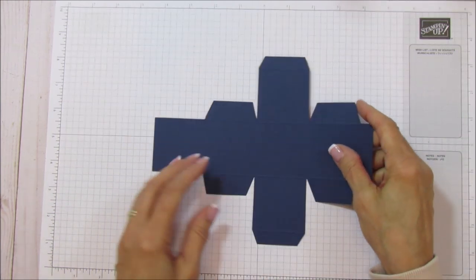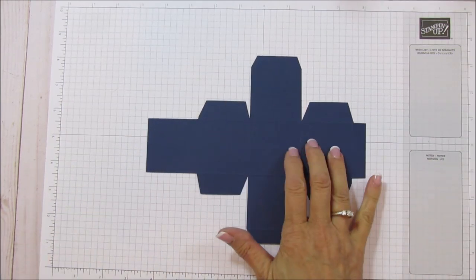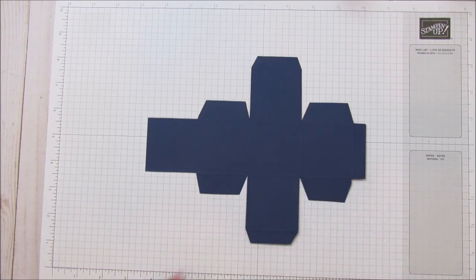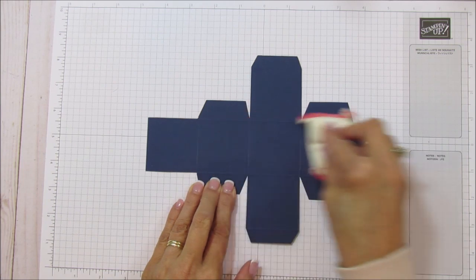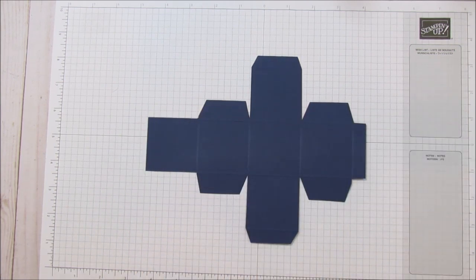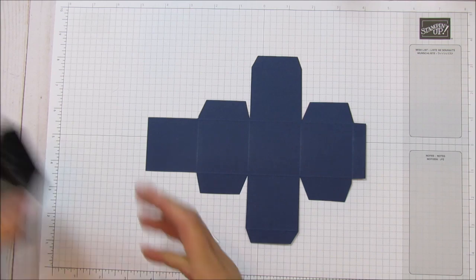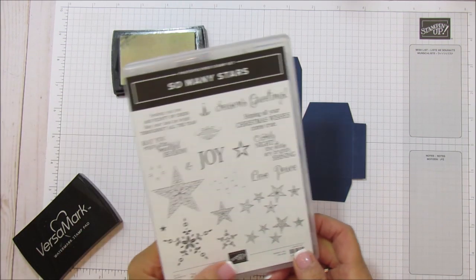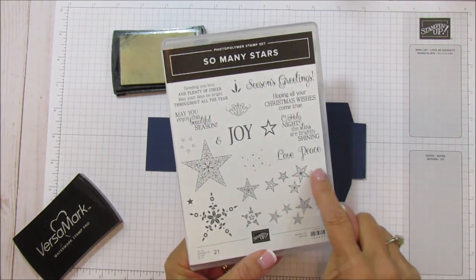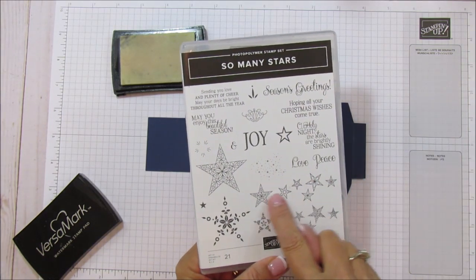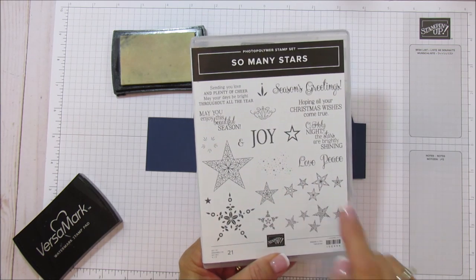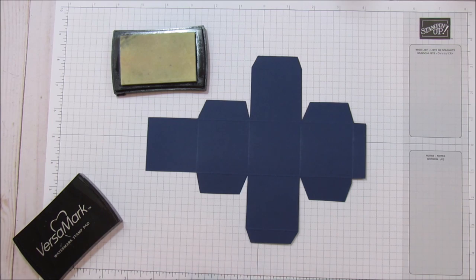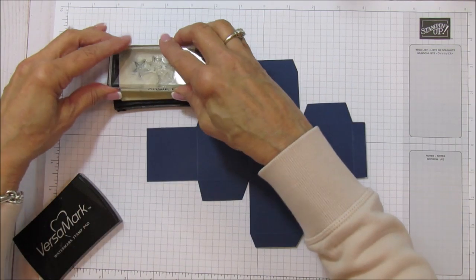Now we are going to go ahead and emboss. We're going to emboss on this side. I'm going to use my embossing buddy, and then we are going to use the Versamark. The stamp set is a bundle - So Many Stars - and I'm using these stars here, grouped together. That's what we're going to emboss with.